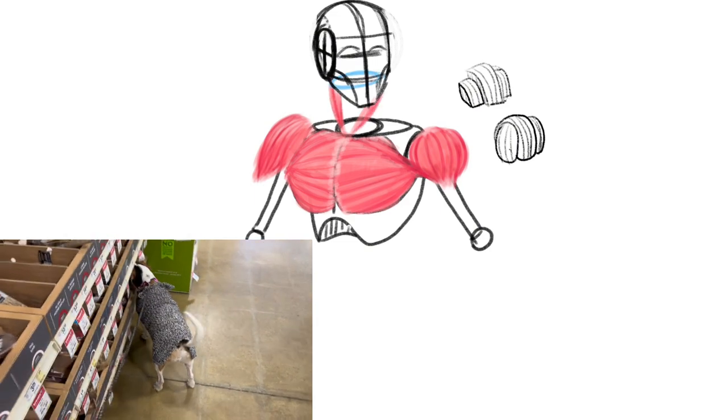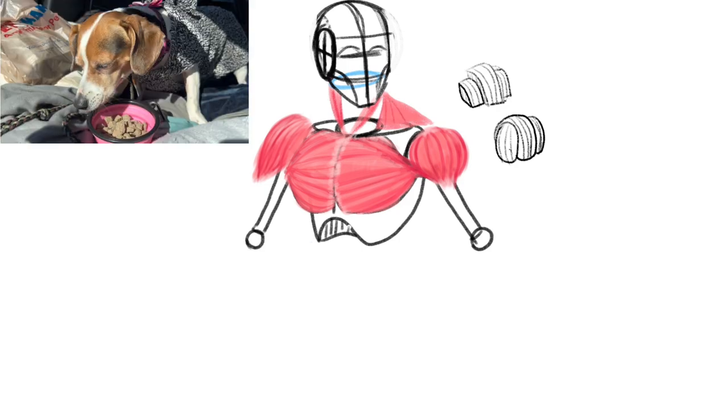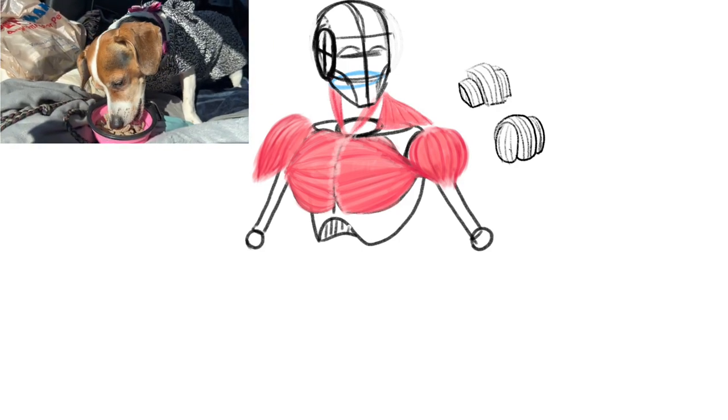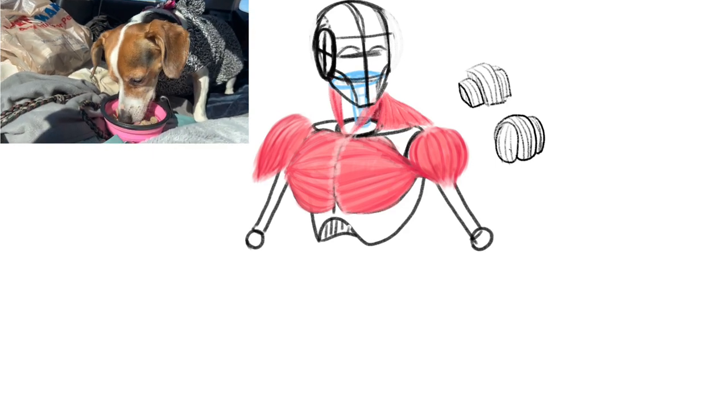Next is the sternum mastoids. They're just long, kind of like chicken fingers, and they connect from the center of the collarbone to the base of the backside of your head.